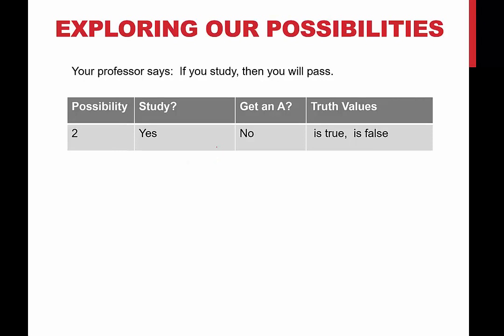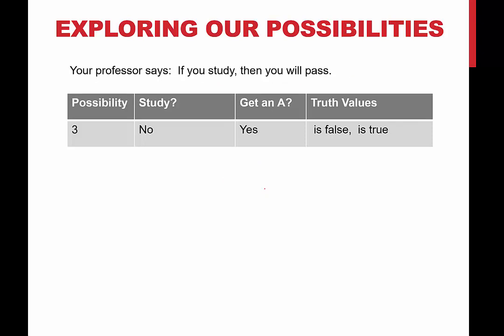Second: you study but you don't get an A — true hypothesis, false conclusion. Your professor said if you study you will pass; you studied but did not pass, so the professor was not telling the truth. This is false. Third: you don't study but you get an A — false hypothesis, true conclusion. The professor's promise was 'if you study,' and you didn't study, so you didn't uphold your end of the bargain. Because of this, the conditional is true regardless of the conclusion.